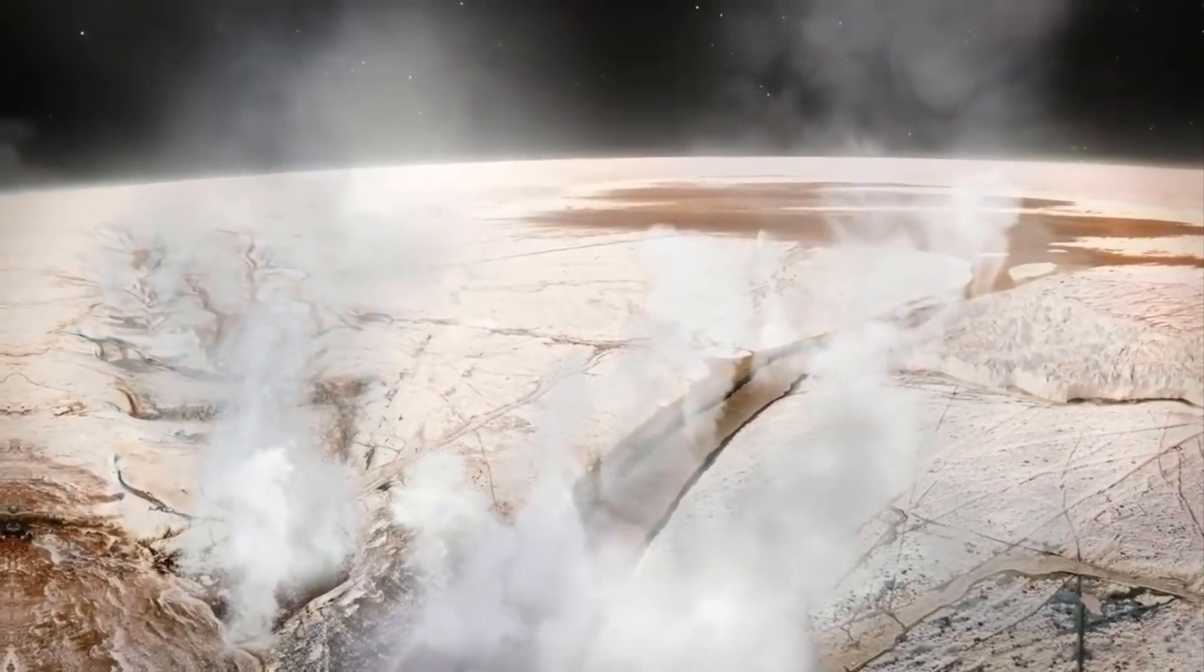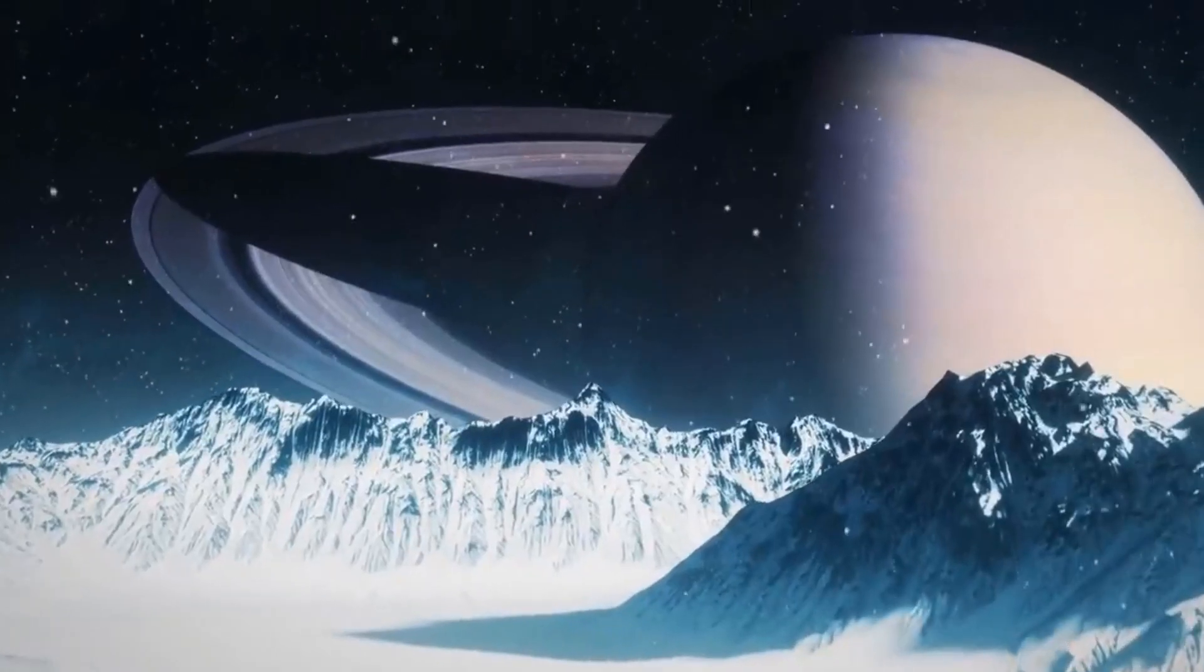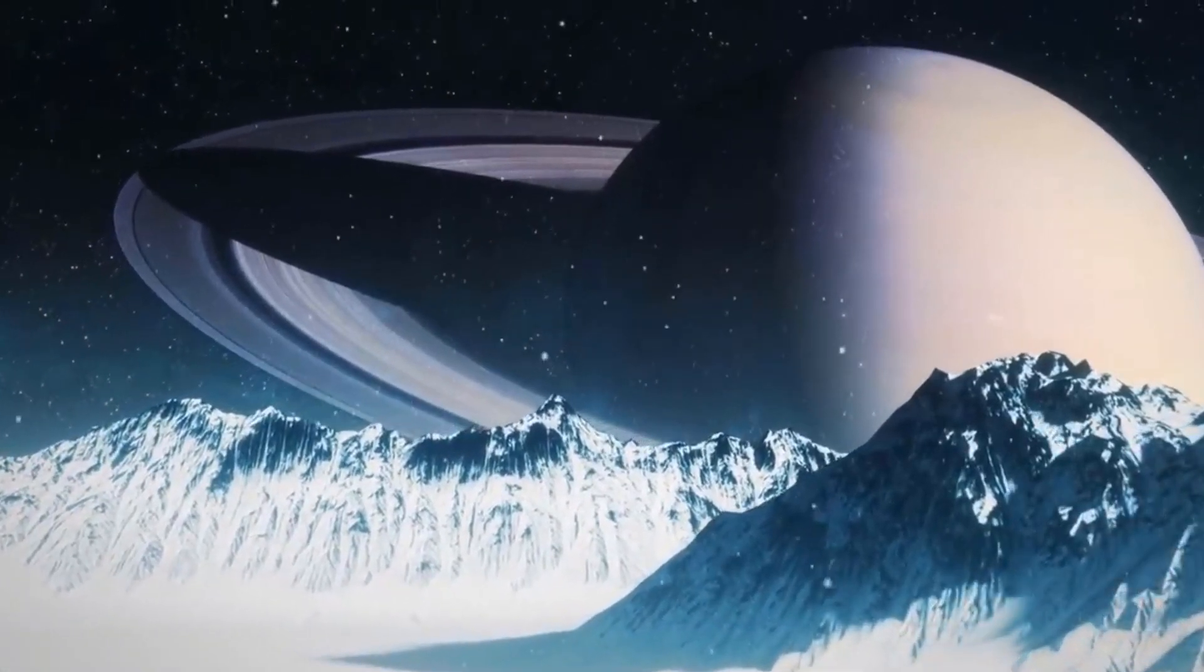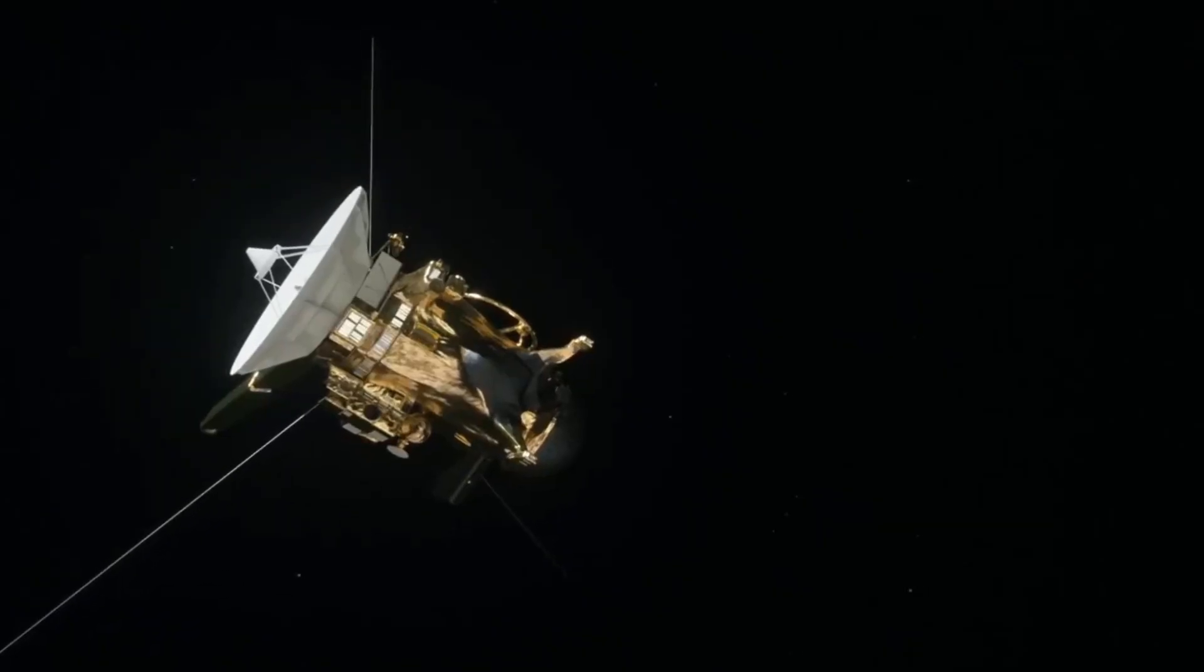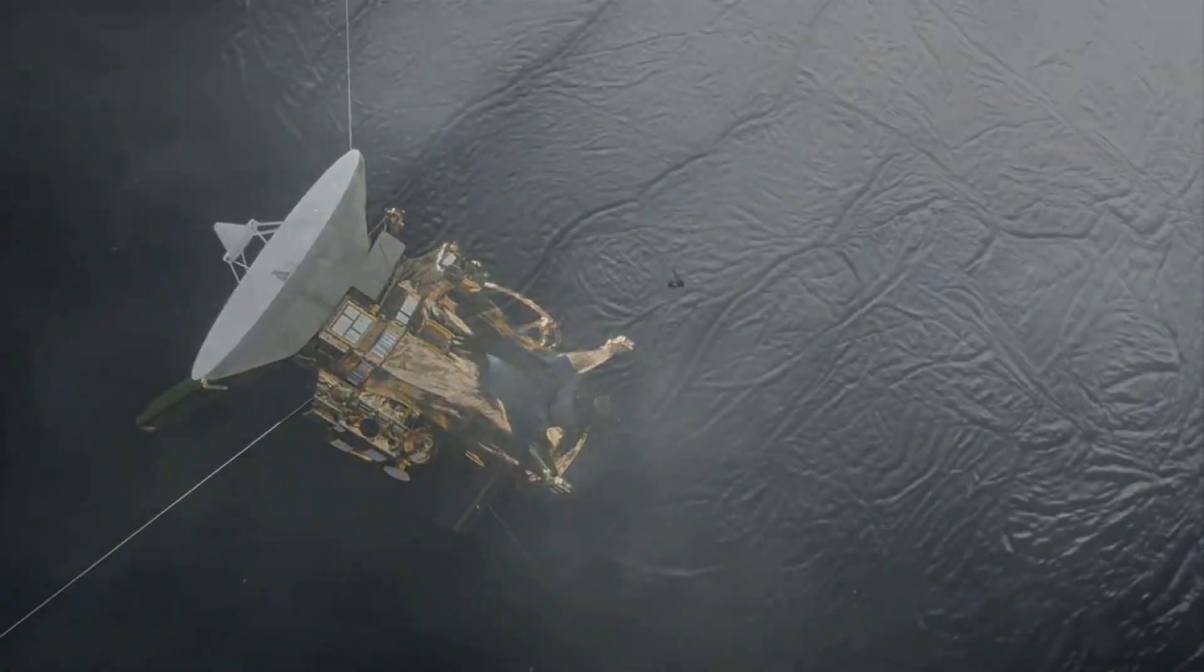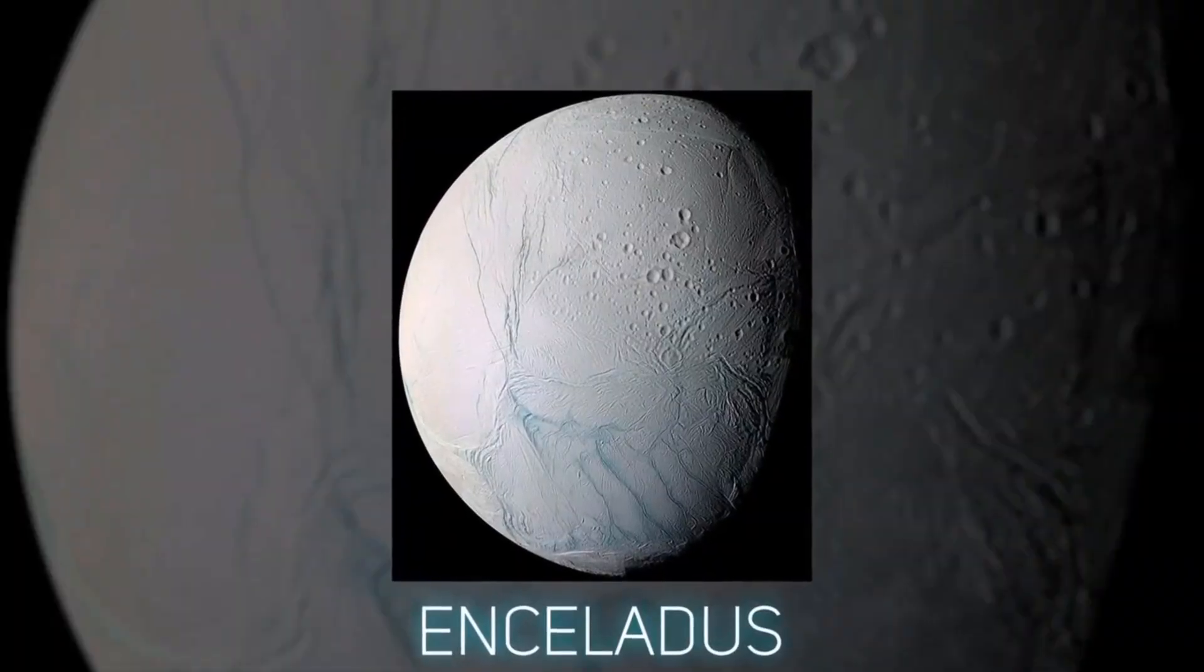Saturn has 53 known moons, with an additional 29 moons awaiting confirmation of their discovery, a total of 82 moons. It is also famous for its spectacular ring system, which consists of seven rings with several gaps and divisions between them.